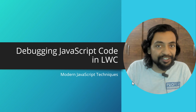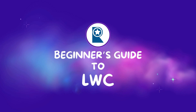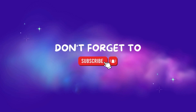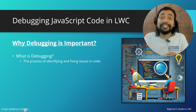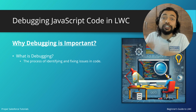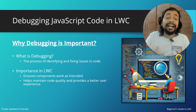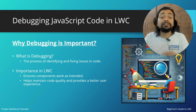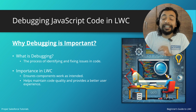First things first: why is debugging important? The process of finding out bugs, identifying issues, and then resolving those issues in code is known as debugging. Its importance in LWC is to ensure components work as intended, to maintain code quality, and to provide a better user experience.